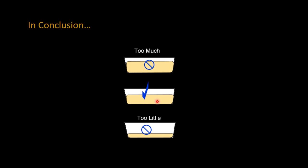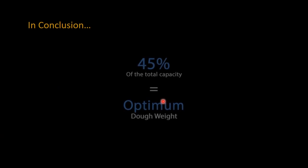Now we know that 45 percent of the total capacity is about optimum dough weight for pan breads. A nice general guideline to start with. Try to keep that in mind. It will really make a difference ultimately at the end of the day with the type of finished quality that you have of your bread.